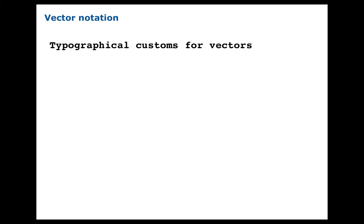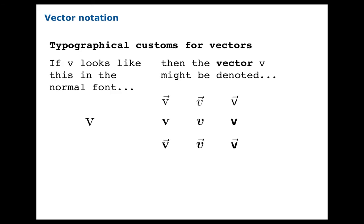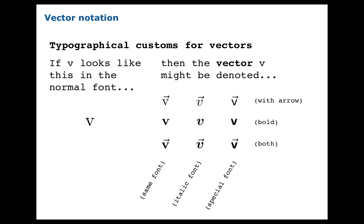You'll see vectors written quite a number of ways in different sources. Suppose V looks like this in the normal font of your source. If you encounter a vector called V, you might see any number of things, so you have to be on your toes. What the author needs to do is indicate it's a vector. You often use an arrow, which is handy when you're at the board. You could use boldface in a printed source, or you could use an italic font, or some special font unique to vectors in your source.